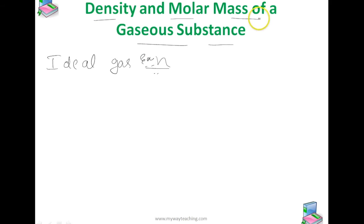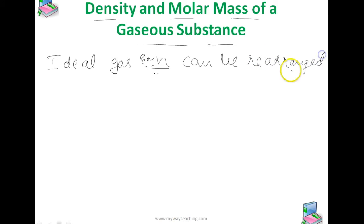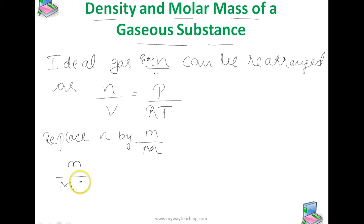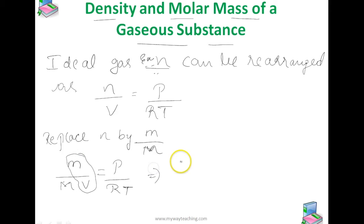The next concept is density and molar mass of a gaseous substance. Consider the ideal gas equation, which can be rearranged: n divided by V is equal to P divided by RT. Replacing n with m divided by M (where m is mass and M is molar mass), we get m divided by M times V equals P divided by RT. Since m divided by V equals density d, we have...